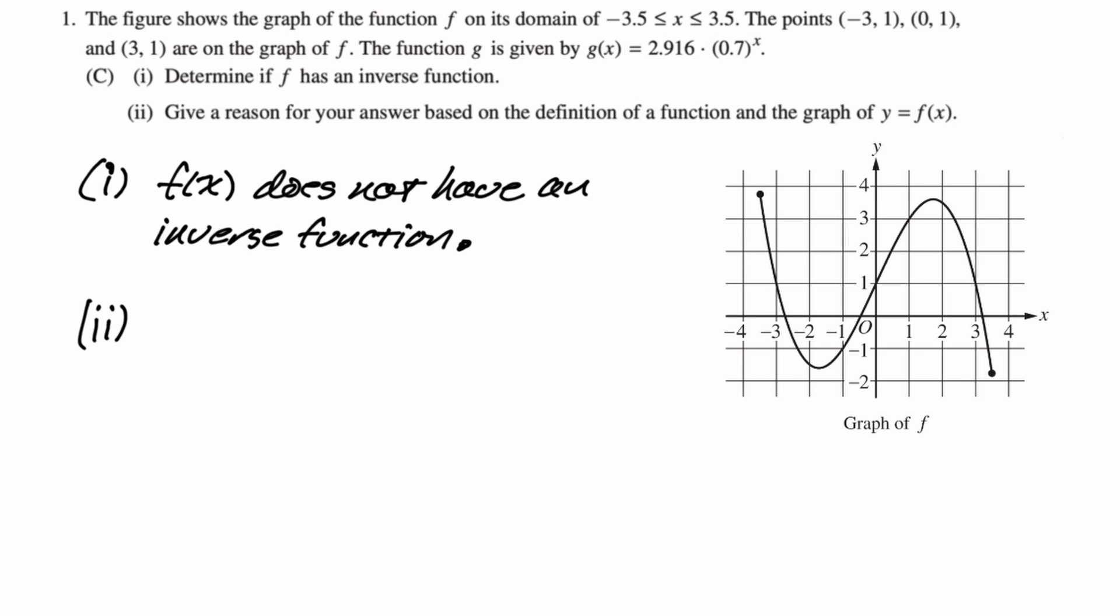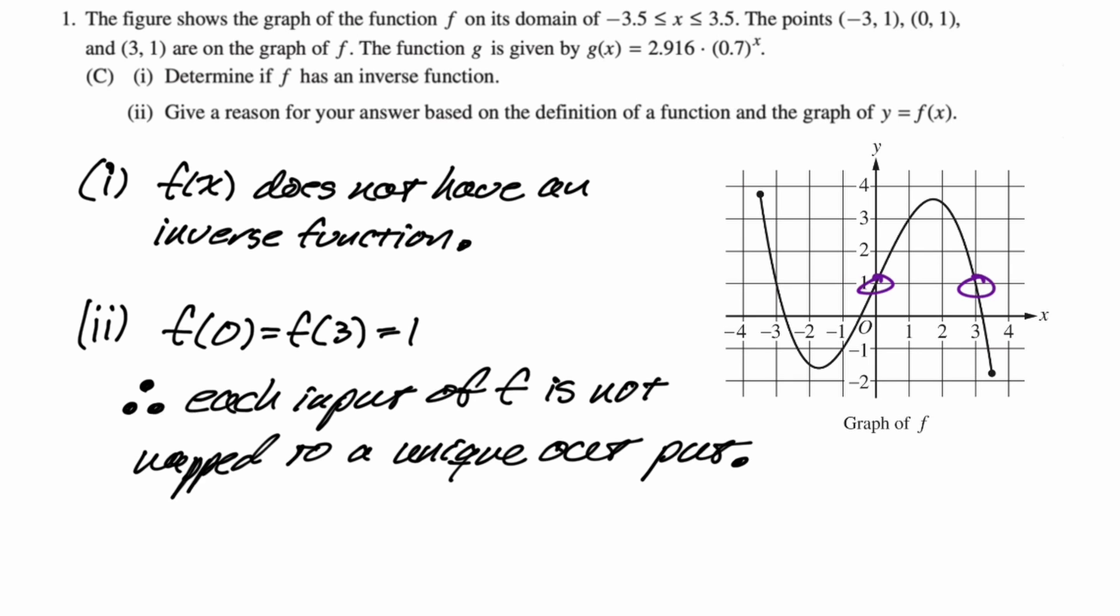For my reasoning, I'm going to point out that there's an output value that is associated with two input values. It's actually associated with three of them. From the ordered pairs, we know that f of zero and f of three are both equal to one. In my mind, that's enough to justify it. But I'm also going to write a sentence that refers to input values mapping to the same output value. Because if two or more input values map to the same output value, the function will not have an inverse function. So I'm going to say each input of f is not mapped to a unique output value. And that's the entire question. I hope this was helpful.